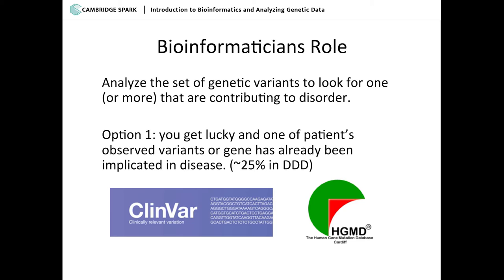That happens in about 25% of cases. There are two main databases people use: ClinVar and the Human Genome Mutation Database. If you're running a study like ours and you discover, say, 10 patients that all have the same mutation in the same gene with the same phenotype, you deposit it into this database and describe it. Then if somebody else later finds a single patient with that same mutation, they can just match it up in the database. These are really useful ways of determining if something you've seen has already been observed elsewhere, though there's also some noise — sometimes clinicians submit things they're sure are causative, but somebody later proves it doesn't actually cause the issue they thought.